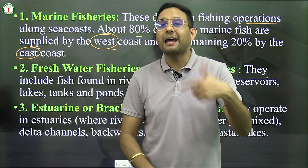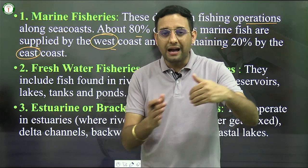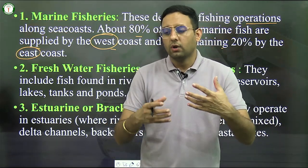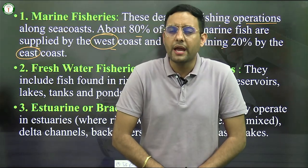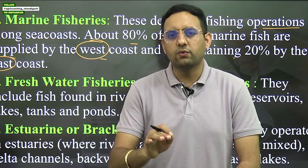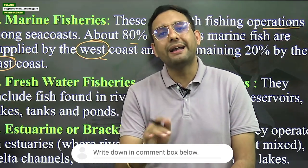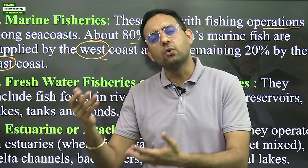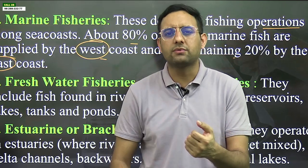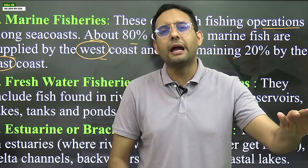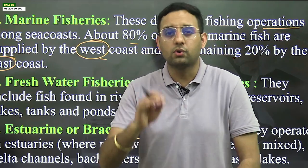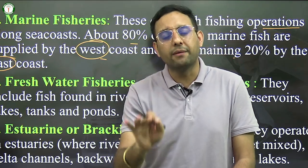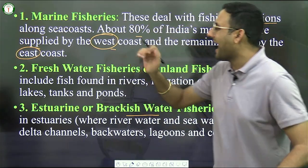Try to identify which states fall under the west coast and which under the east coast, and how many maritime states and union territories India has. Maritime means having a coastline — for example, Gujarat has a coastline so it is a maritime state, whereas Rajasthan does not have a coastline. Write your answer in the comment box.